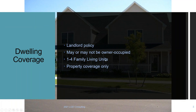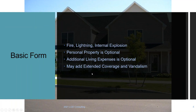Anything larger than a BOP goes to a commercial package or commercial policy. Dwelling coverage covers one to four family living units and is property only — it's a monoline policy. Whereas the homeowner's policy covers property, theft, and liability, dwelling is just property. You can add other coverages for an additional charge.